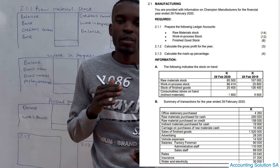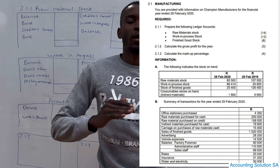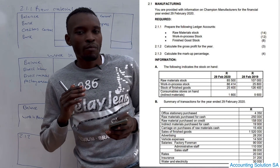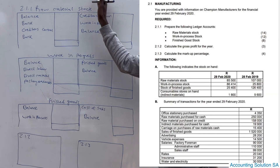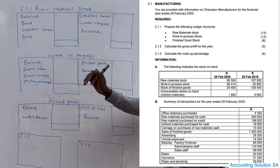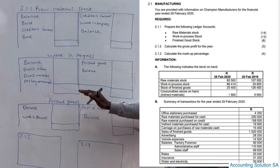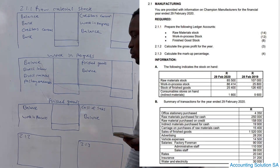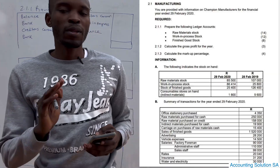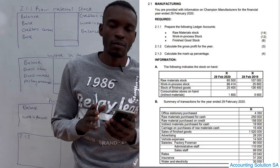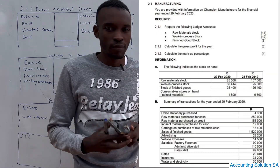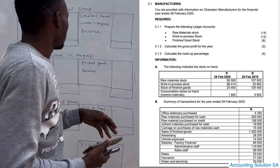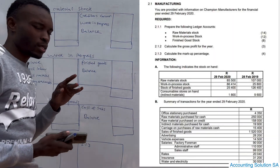Hi, Grade 11 students. In this video we are going to continue with manufacturing. The accounts that we are going to draw today are: a raw material stock account, we are going to do work in progress account, and the last one we are going to do is finished goods. Please make sure that you understand them properly so that you can get these free marks.